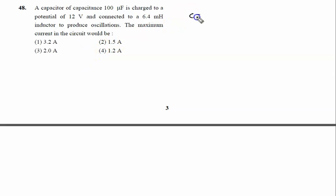A capacitor of capacitance 100 microfarad, so 100 into 10 to the power minus 6 farad, you can say 10 to the power minus 4 farad, is charged to a potential of 12 volt and is connected to 6.4 millihenry inductor. Inductor is 6.4 into 10 to the power minus 3 henry.